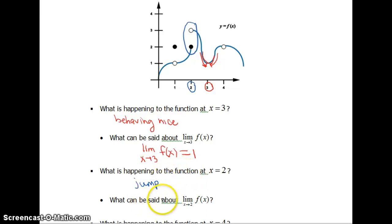Okay, what can be said about the limit as x approaches 2? Well, let's do what we just did. So let's come in from the left of 2. It looks like my y values are also approaching 2. But this is where the jump occurs. If we come in to the right side of 2, it looks like my y values are now approaching 3.